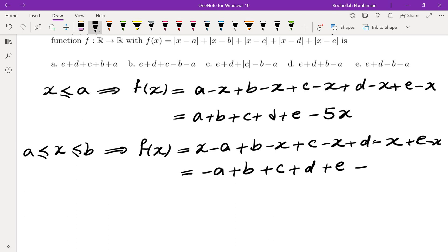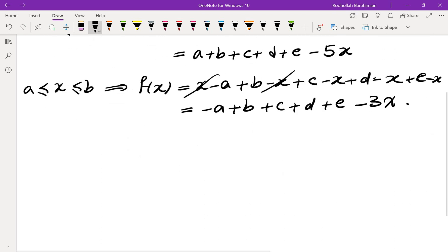so it really doesn't matter what the constant is all that much. But what we get is two of the x's cancel, and we get a slope of negative 3, which means the function is going to remain a function of negative slope, which means the minimum is going to be at x equals B.